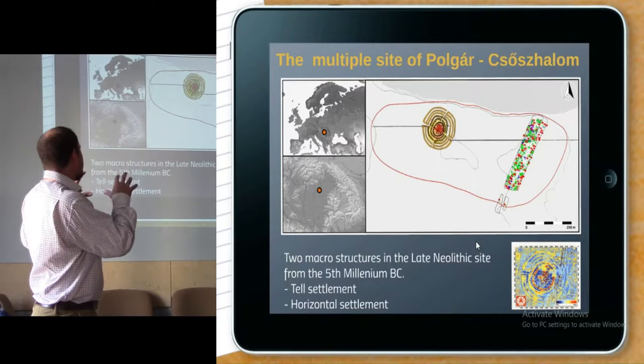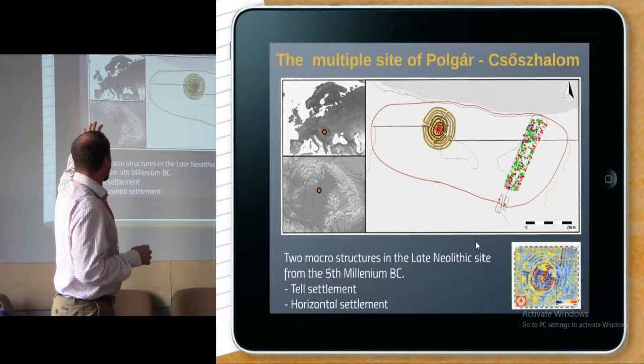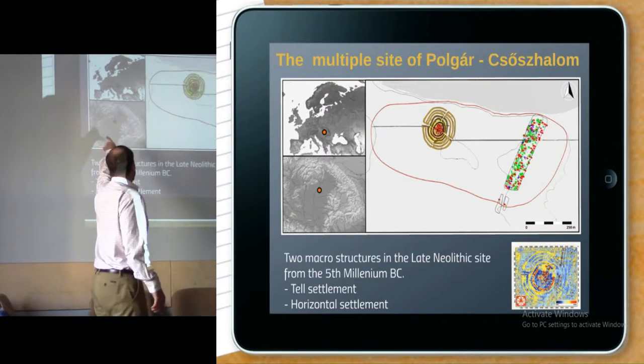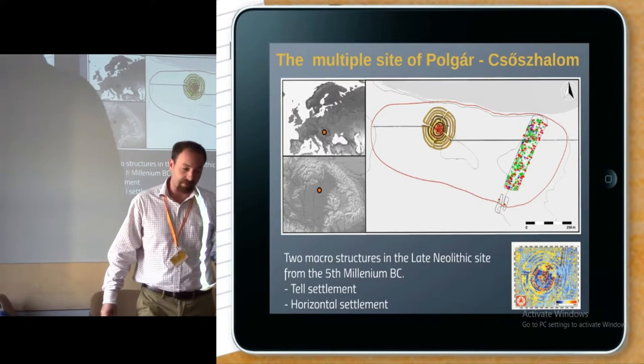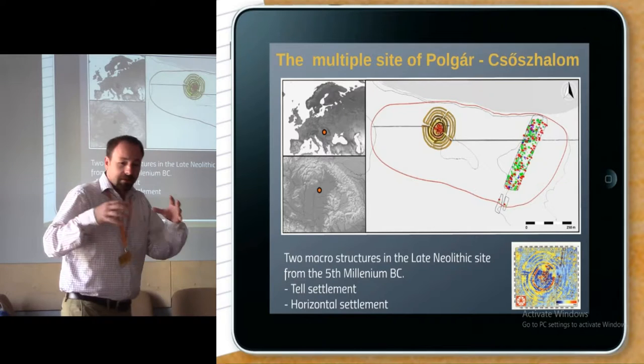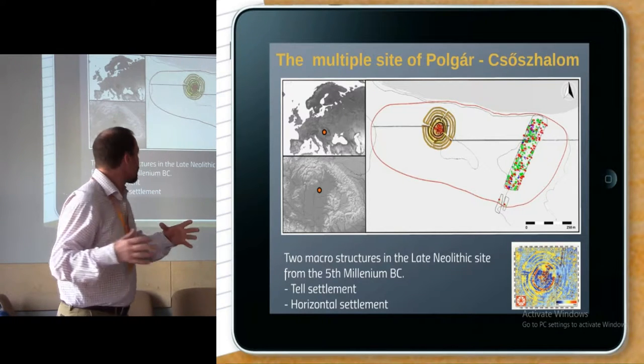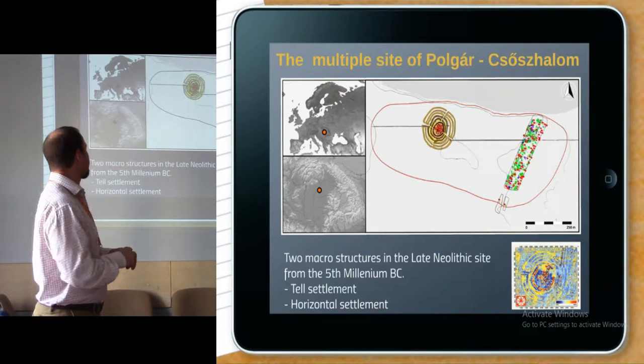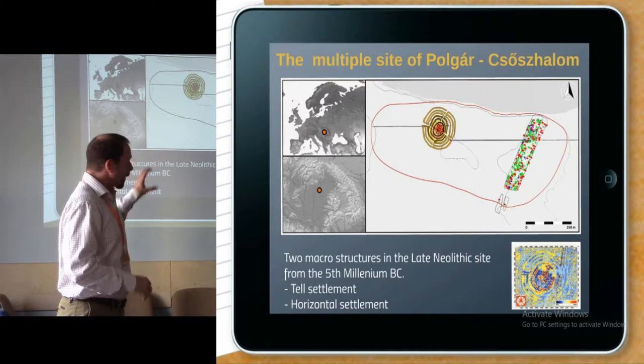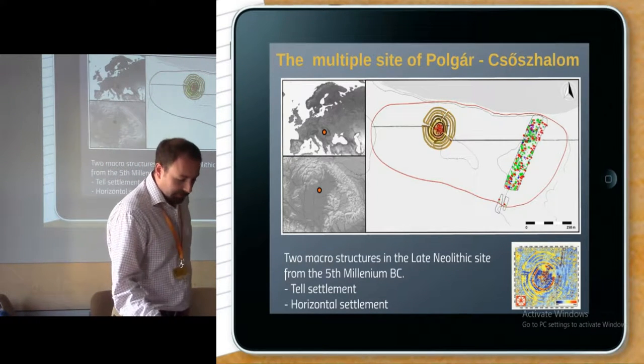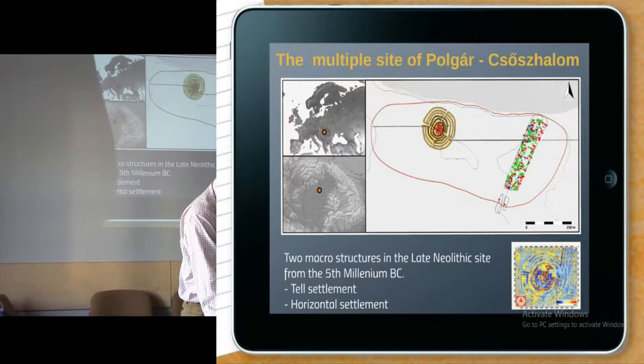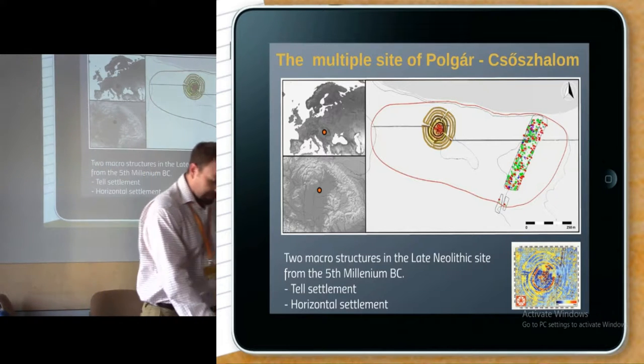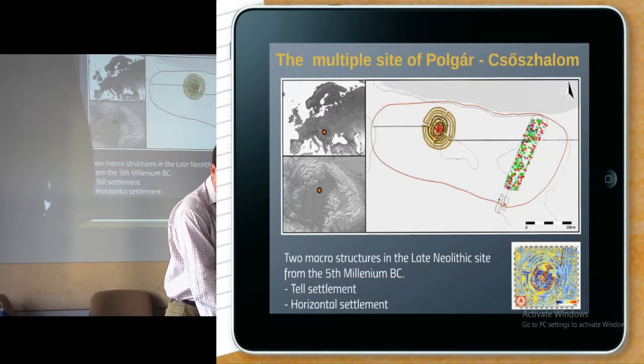Polgar Csoszhalom is a very special site located in central Europe, in the Carpathian Basin, in the northeast part of Hungary. This is a special macro structure that includes two different types of settlements, a tell settlement and a horizontal one. In my presentation I'd like to speak about all of the settlements dated to the first half of the 5th millennium BC.